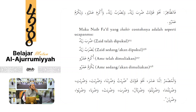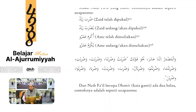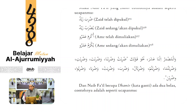Contoh domir na'ib fa'il: duribtu na'ib fa'ilnya tu, duribna na'ib fa'ilnya na, duribta ta'nya, duribti, diribtuma, diribtum, duribtunna. Duriba - domir mustatir takdirnya hua. Duribat - domir mustatir takdirnya hiya. Duribu - waw na'ib fa'ilnya. Semuanya ada keterangan di buku catatan kakinya.